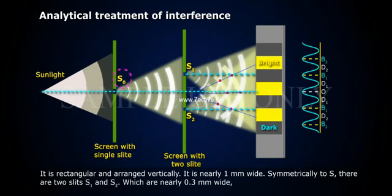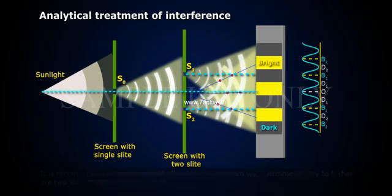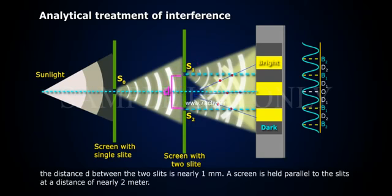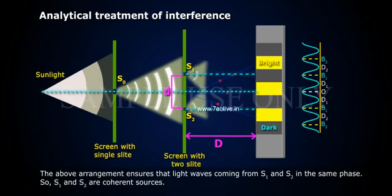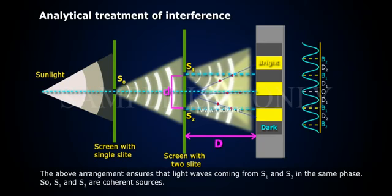Symmetrically to S there are two slits, S1 and S2, which are nearly 0.3 mm wide. The distance D between the two slits is nearly 1 mm. A screen is held parallel to the slits at a distance of nearly 2 m. The above arrangement ensures that light waves coming from S1 and S2 are in the same phase. So, S1 and S2 are coherent sources.